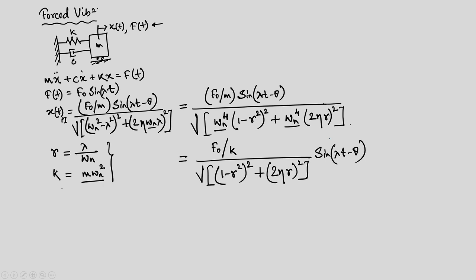Since K equals M times omega-n squared, we replace M omega-n squared by K. Ultimately we get F-naught over K in the numerator. Now, F-naught over K is simply the static deformation — we call it X-static (X_st). So the numerator becomes X_st, and the amplitude of the response is X_st divided by the square root of 1 minus R squared whole squared plus 2 eta R whole squared.